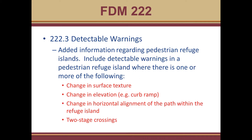Going back to pedestrian refuge islands — we have a new section on pedestrian refuge islands at intersections, which will be discussed in one of the other webinars. But here in the detectable warning section of the pedestrian chapter, we talk about when to include detectable warnings in a pedestrian refuge island. They should be used when one or more of the following conditions exist: a change in surface texture, a change in elevation such as a curb ramp, or a change in the horizontal alignment of the path within the refuge island.